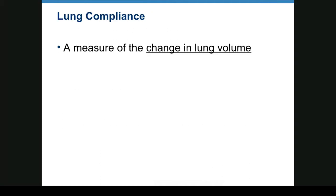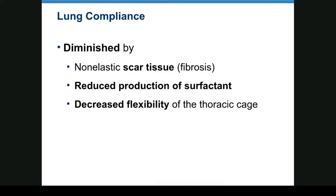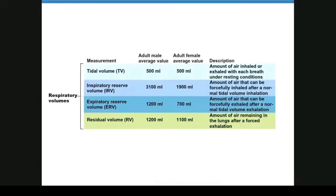Surfactant is not produced in sufficient quantities in premature infants, who will develop infant respiratory distress syndrome. If you know a baby will be delivered early, a shot of corticosteroid will often increase the amount of surfactant available in the lungs. Lung compliance is a measure of the change in lung volume. Lungs cannot change as much if you have scar tissue, insufficient surfactant, or decreased flexibility of the thoracic cage.